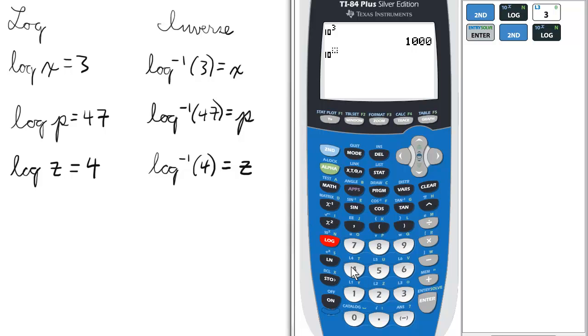Basically, it's 10 raised to the power. In this case, we enter 47. That's a big number: 1 times 10 to the 47th power.